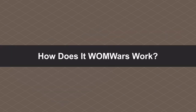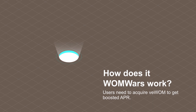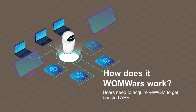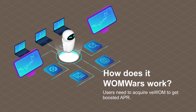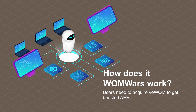How does WOM Wars work? Users need to acquire VEWOM to get a boosted APR. Some protocols acquire VEWOM and provide boosted APR for users who do not have VEWOM. In this way, they acquire revenue for themselves, provide boosted APR for users, and provide rewards for WOM converters. These protocols compete with each other to acquire more VEWOM.